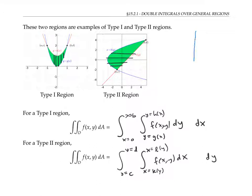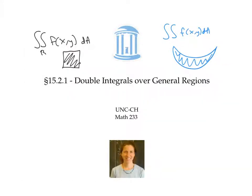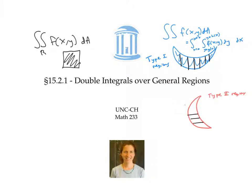From time to time, you might encounter a region that is both a Type 1 and a Type 2 region. In that situation, you get to choose which way to integrate, and you might find that one way is simpler to compute than the other. You might also encounter regions that are neither Type 1 nor Type 2. In that situation, a nice trick is to divide the region into a union of Type 1 and Type 2 regions and integrate over each piece separately. In this video, we integrated functions over Type 1 regions by integrating first in the y direction then in the x direction, and over Type 2 regions by integrating first in the x direction and then in the y direction.